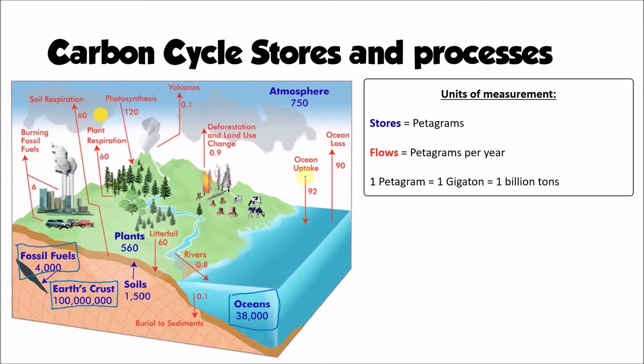The next most significant store is actually soils. One thing that often gets overlooked when we think about the carbon cycle is the carbon that's held within the soil. That carbon is there as a result of either weathering from rocks that make up the crust or through the decaying of plant and animal material.